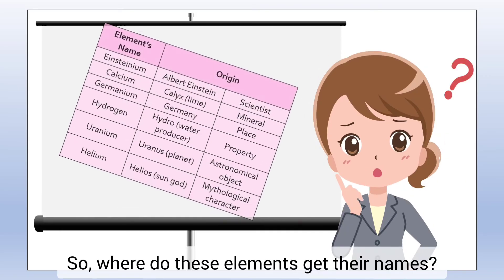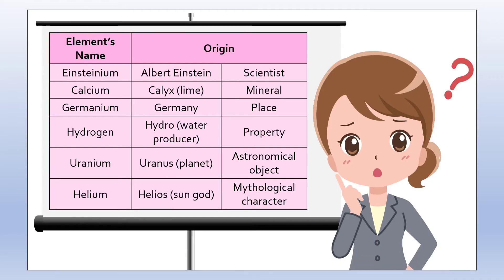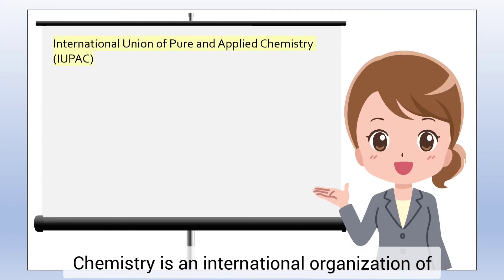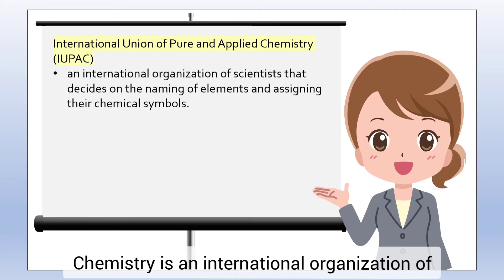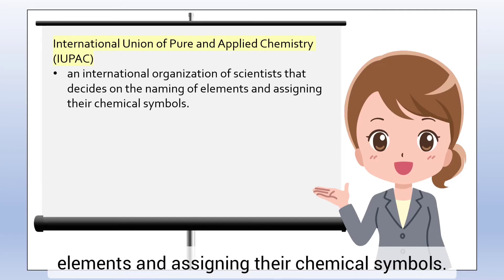So, where do these elements get their names? The International Union of Pure and Applied Chemistry is an international organization of scientists that decides on the naming of elements and assigning their chemical symbols.